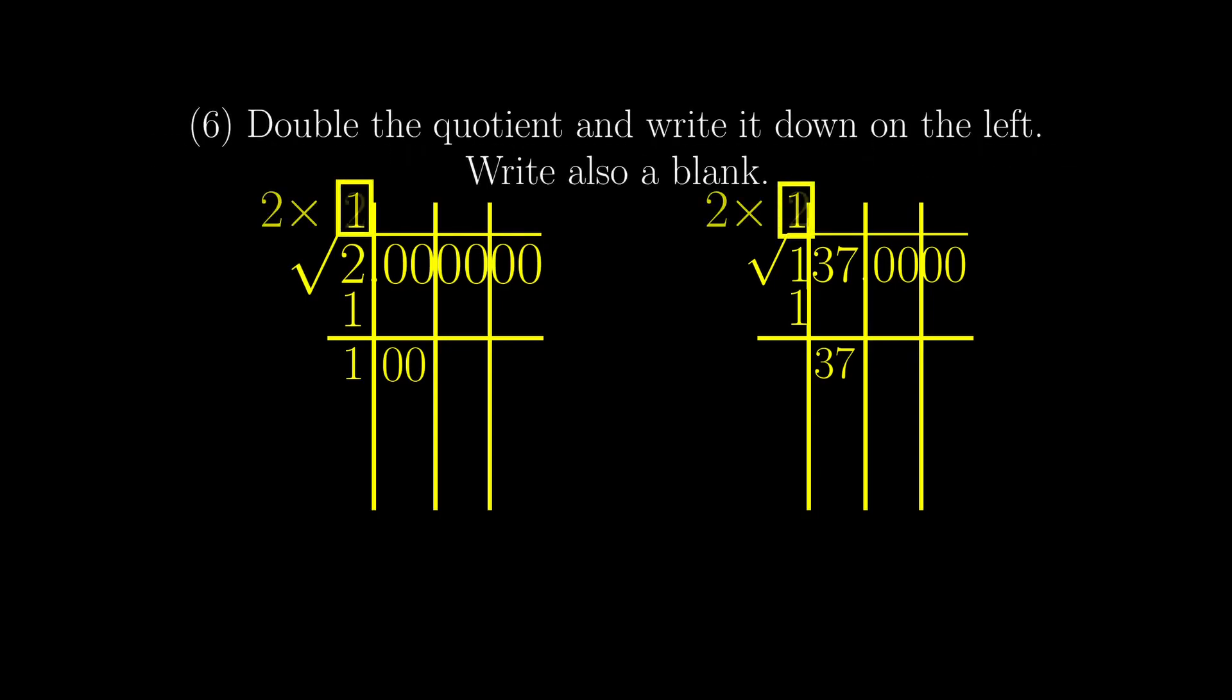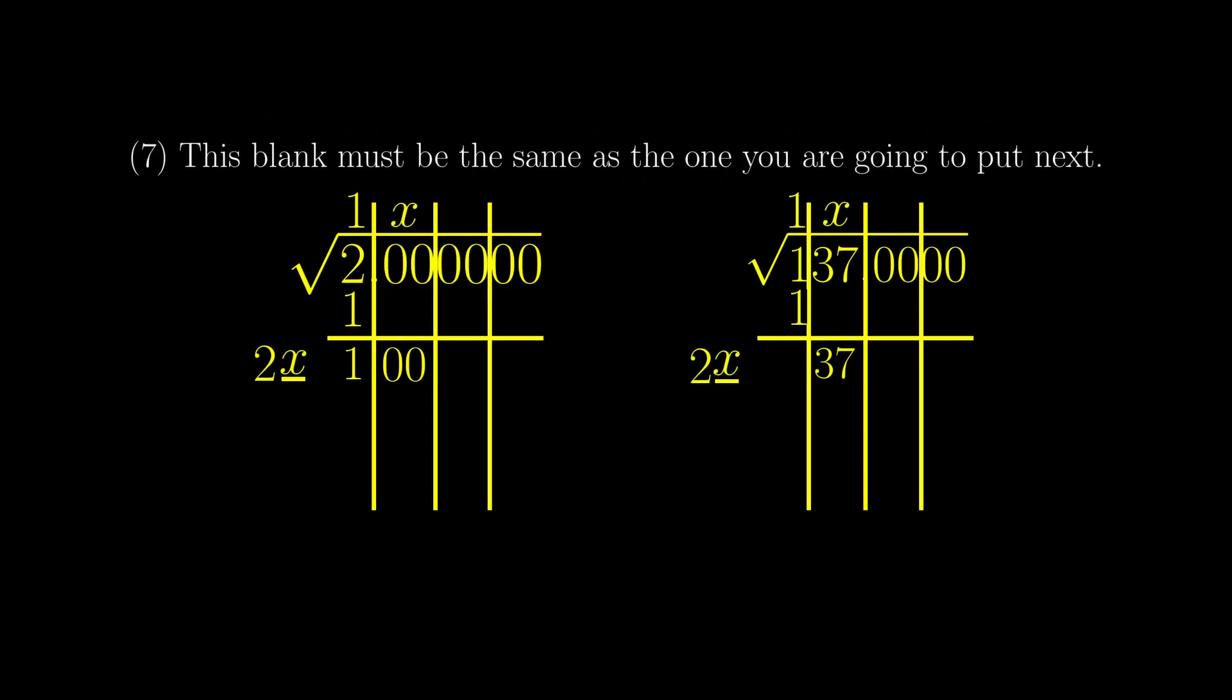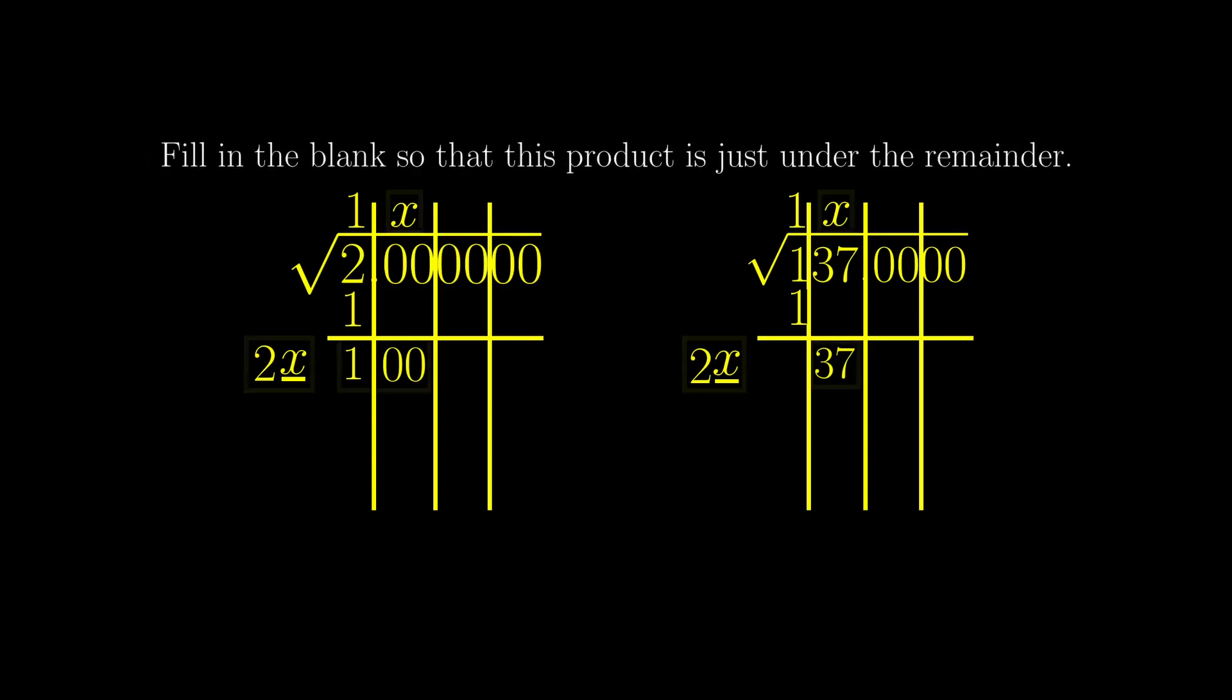Multiply the quotient by 2, and write it down on the left. Write also a blank. This blank must be the same as the one you are going to put next. Fill in this blank so that this product is just under the remainder.